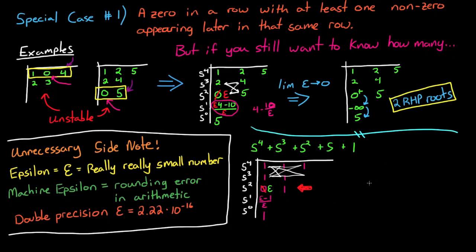But we still want to know how many roots there are in the right half plane, so we replace the 0 with epsilon and continue filling out the array. And when we take the limit as epsilon approaches 0, the fourth row becomes negative, the fifth row becomes positive again, proving that this system has two roots in the right half plane.